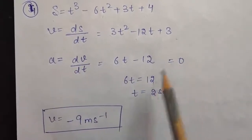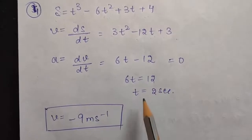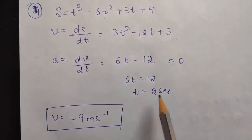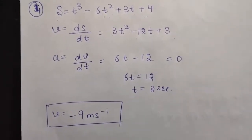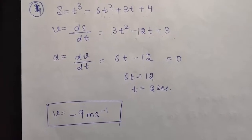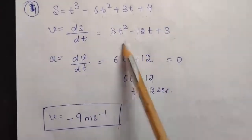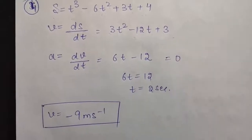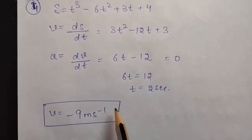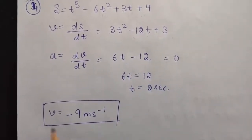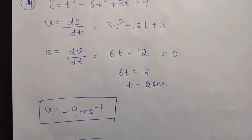When acceleration is 0, that means 6t = 12, so t will come to be 2 seconds. To calculate velocity when acceleration is 0, put t = 2 seconds into the velocity equation and solve. You will get the value of velocity to be minus 9 m/s. That is the velocity at which the acceleration becomes 0.